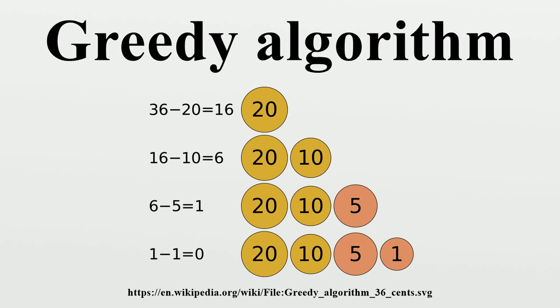The choice made by a greedy algorithm may depend on choices made so far, but not on future choices or all the solutions to the sub-problem. It iteratively makes one greedy choice after another, reducing each given problem into a smaller one. In other words, a greedy algorithm never reconsiders its choices.